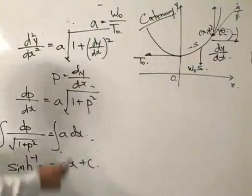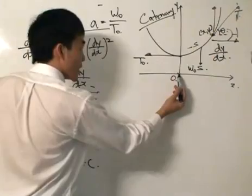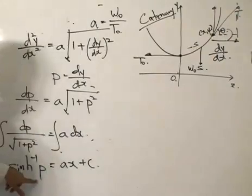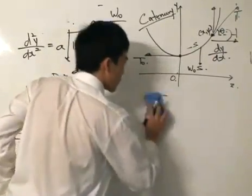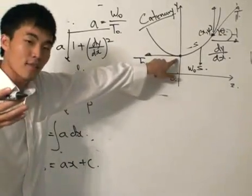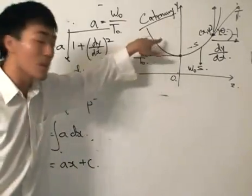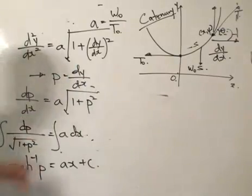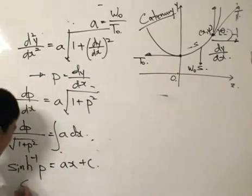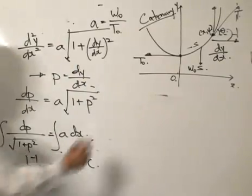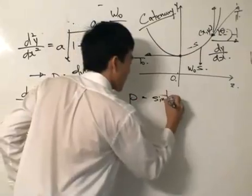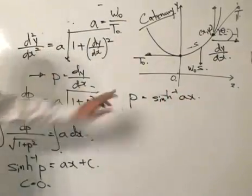When X is 0, which is this point over here, what can we say about P? We know P equals dy/dx. When X equals 0, the gradient equals 0 because it's the minimum point, and therefore dy/dx equals 0, so P equals 0. If P equals 0, we get sinh⁻¹(0) equals 0, and therefore C equals 0. Now we can simply write P equals sinh(AX).